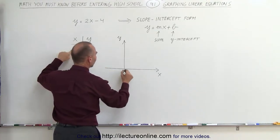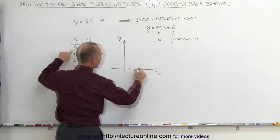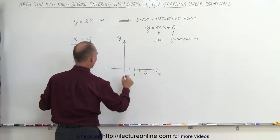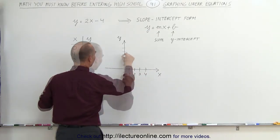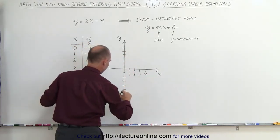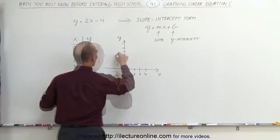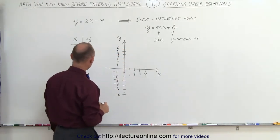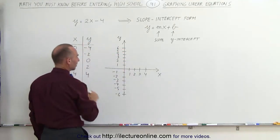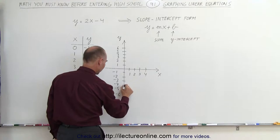When x equals 0, y is negative 4. So here's 1, 2, 3, 4, and we have 1, 2, 3, 4, negative 4, negative 5, negative 6. Alright, so when x equals 0, y is negative 4. 0, negative 4, that's this point right there. When x equals 1, y is negative 2, that would be this point right there.